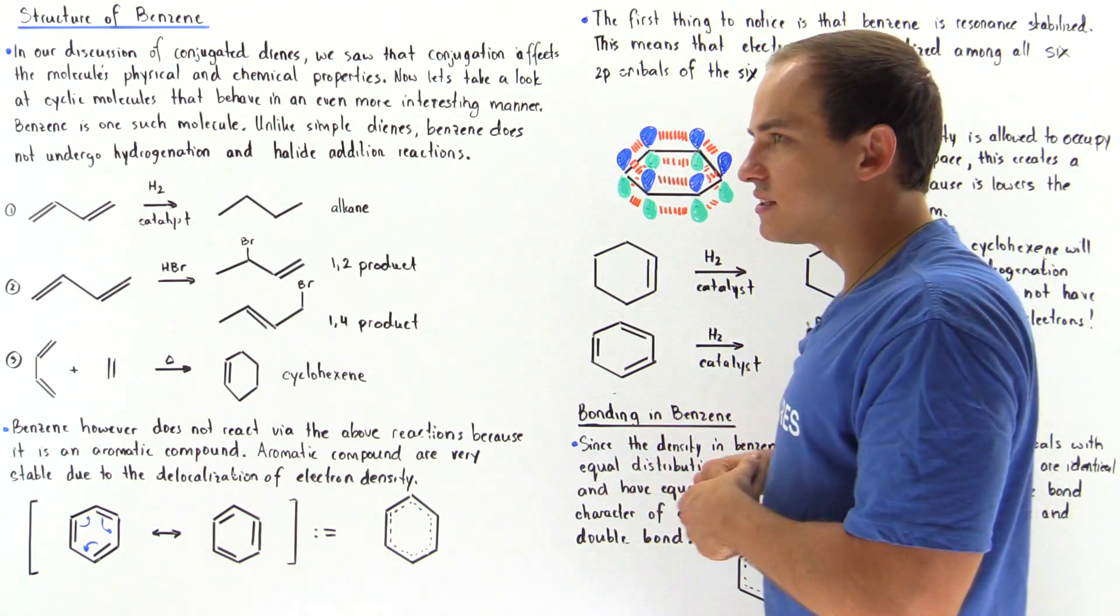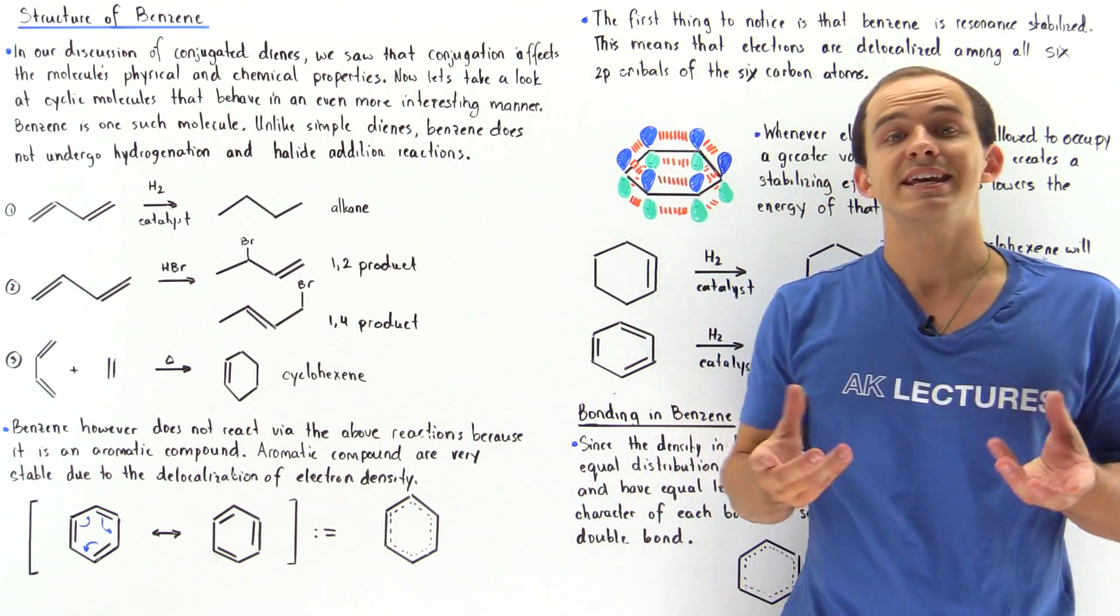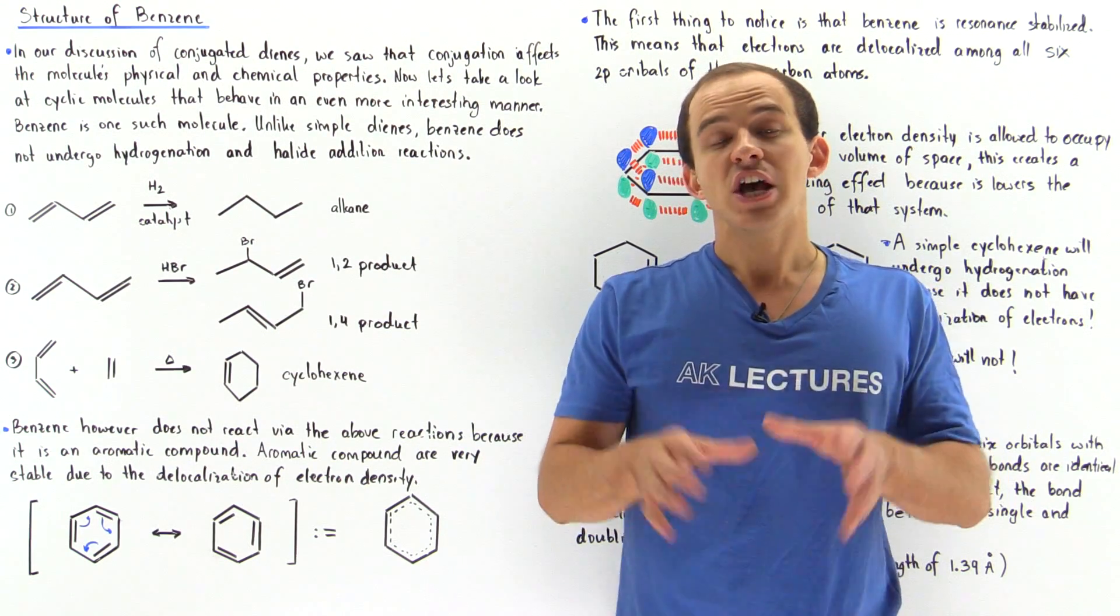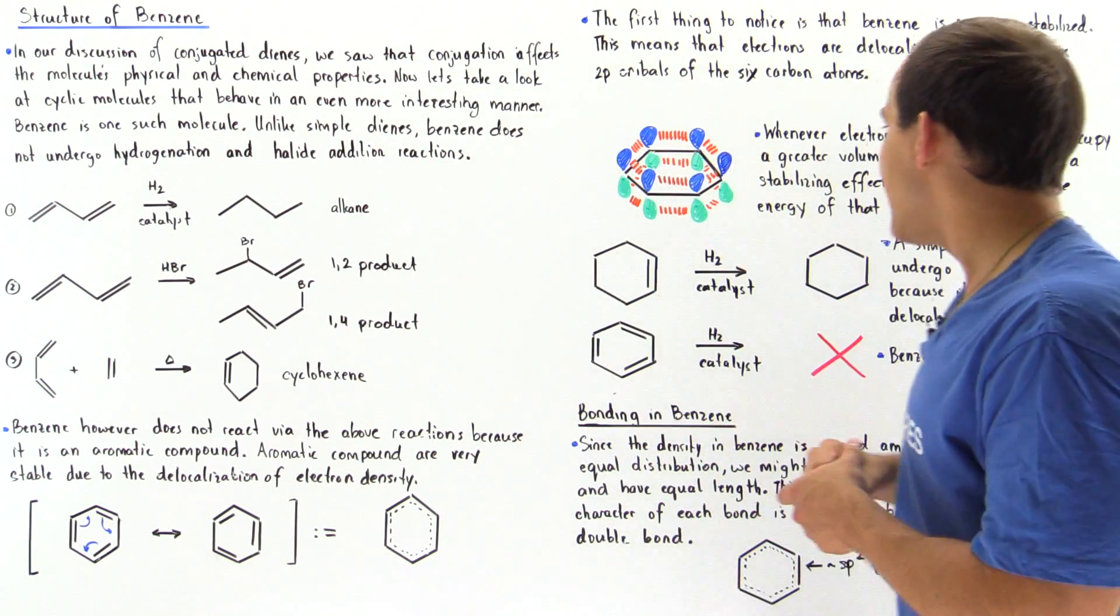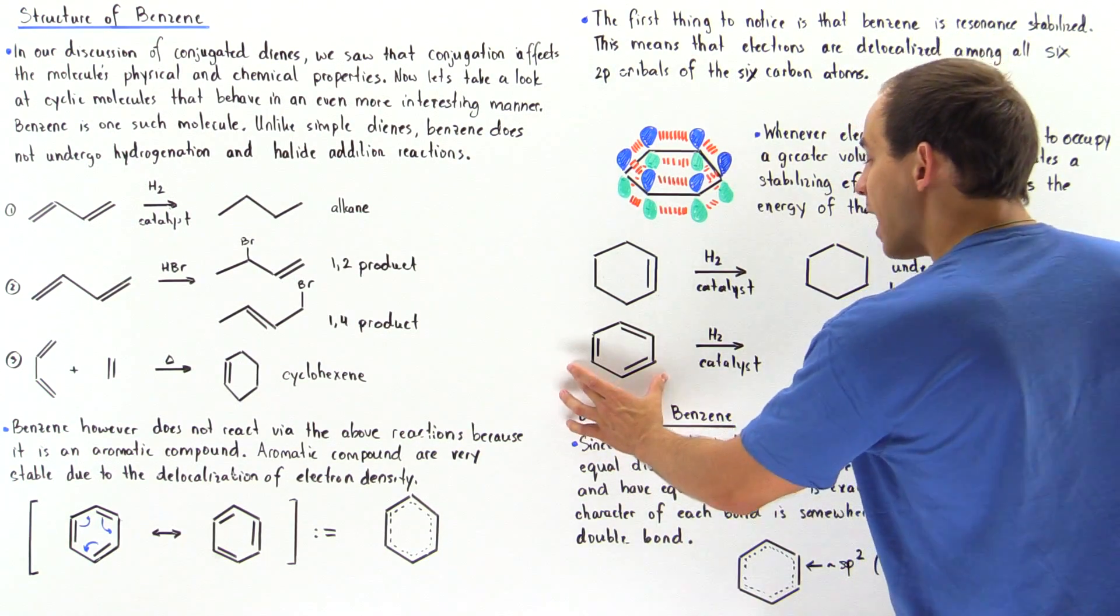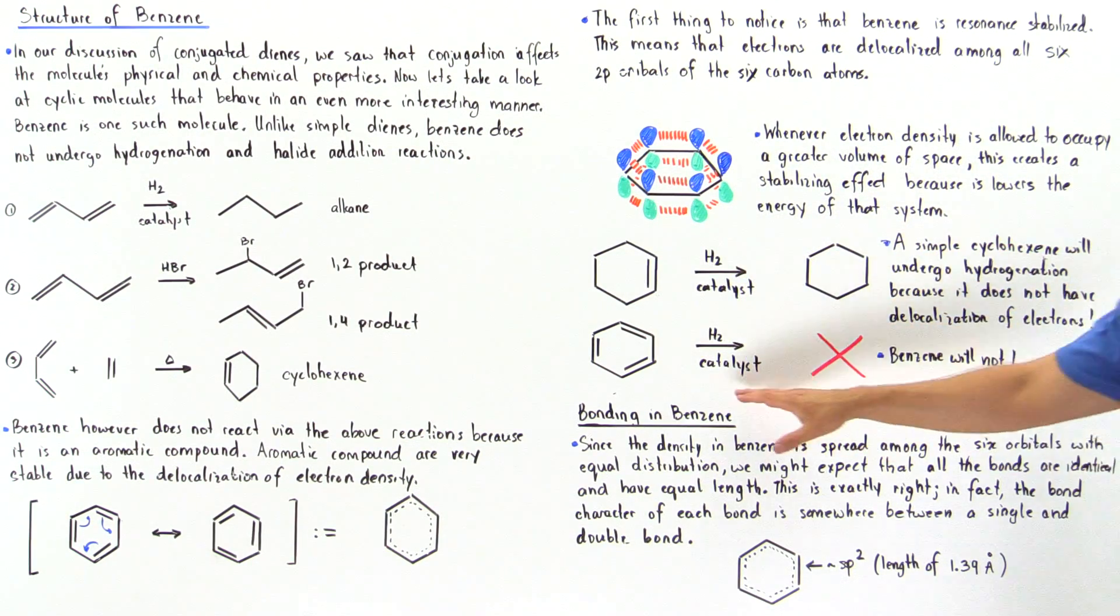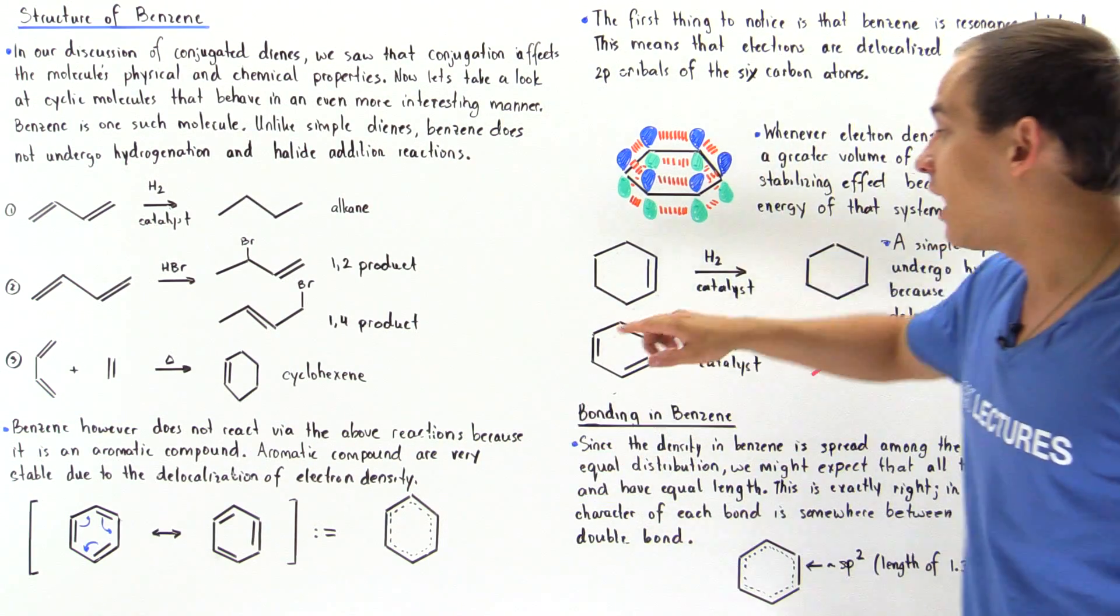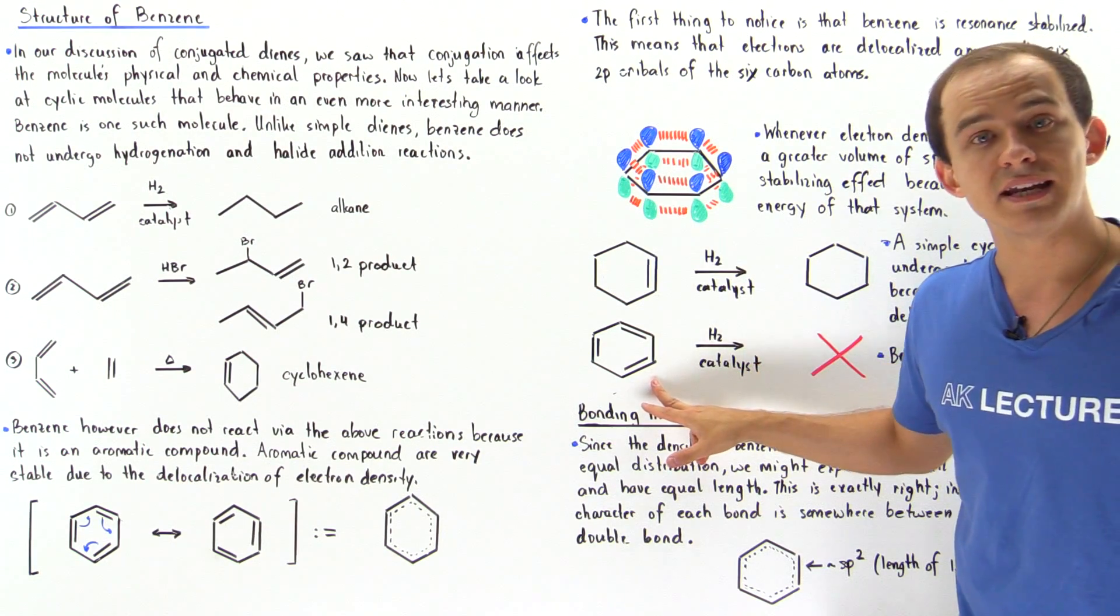So we know from quantum mechanics that whenever our electrons or electron density is allowed to occupy a greater volume, a greater region of space, that basically stabilizes the system by decreasing the energy of that particular molecule. And that's exactly why our benzene molecule will not undergo the hydrogenation reaction in the presence of H2 and a catalyst. But this cyclohexene will because this cyclohexene does not have this conjugation that our benzene has.